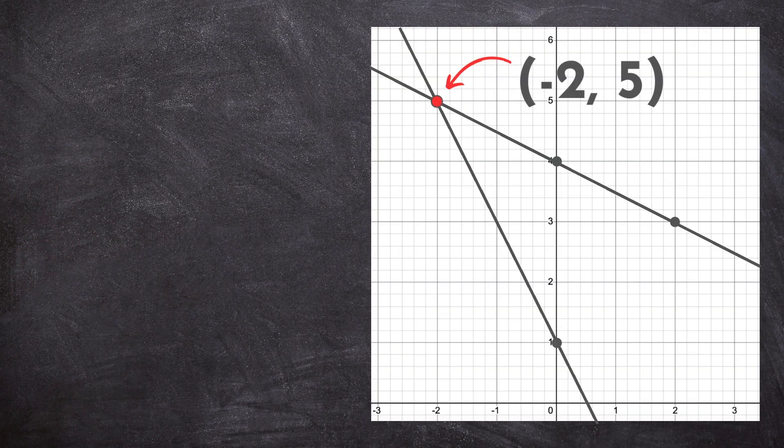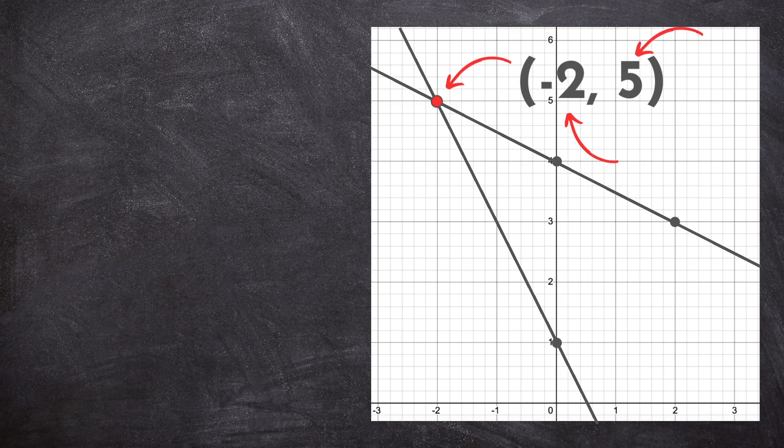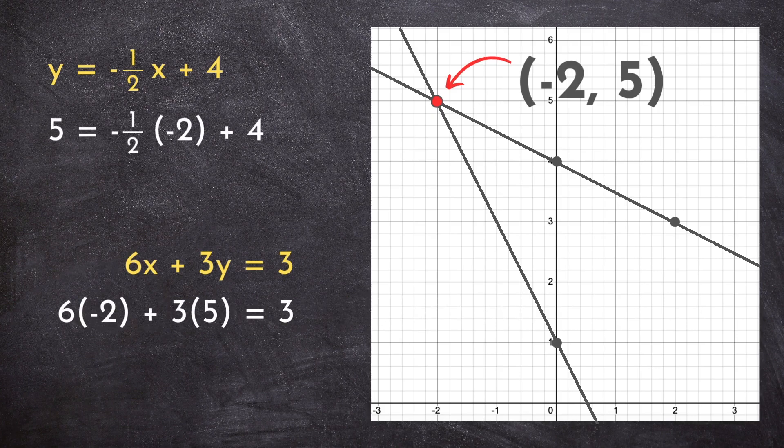Now making mistakes in math is kind of scary, which is why my favorite part about these problems is that you can check your answer. To make sure this point of intersection does in fact fall on each line, we can take the x value of -2 and the y value of 5 and substitute them back into each equation. What should happen is that you get a true statement in each case, which we do. So solving a linear system by graphing isn't really all that scary at all, is it?